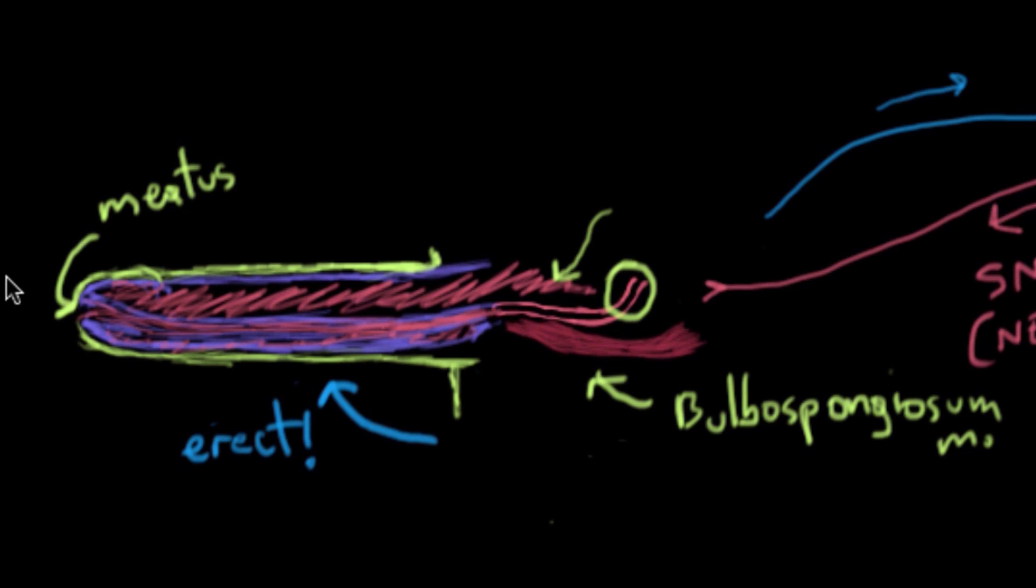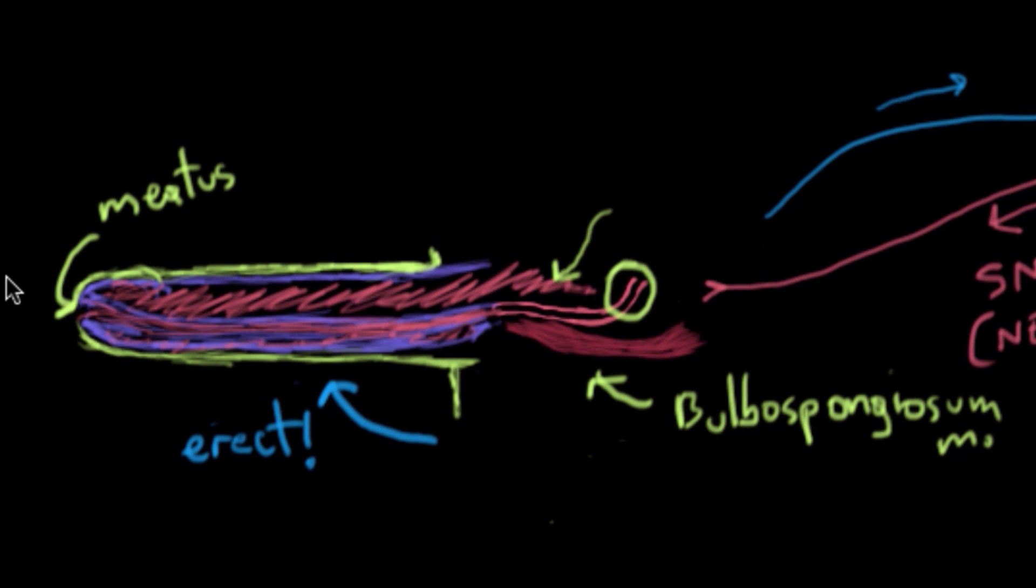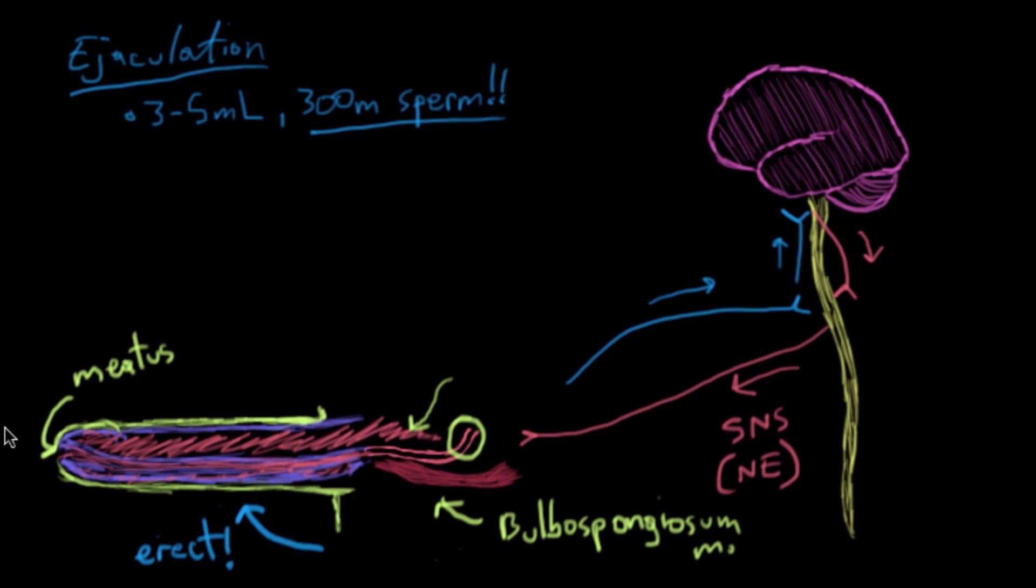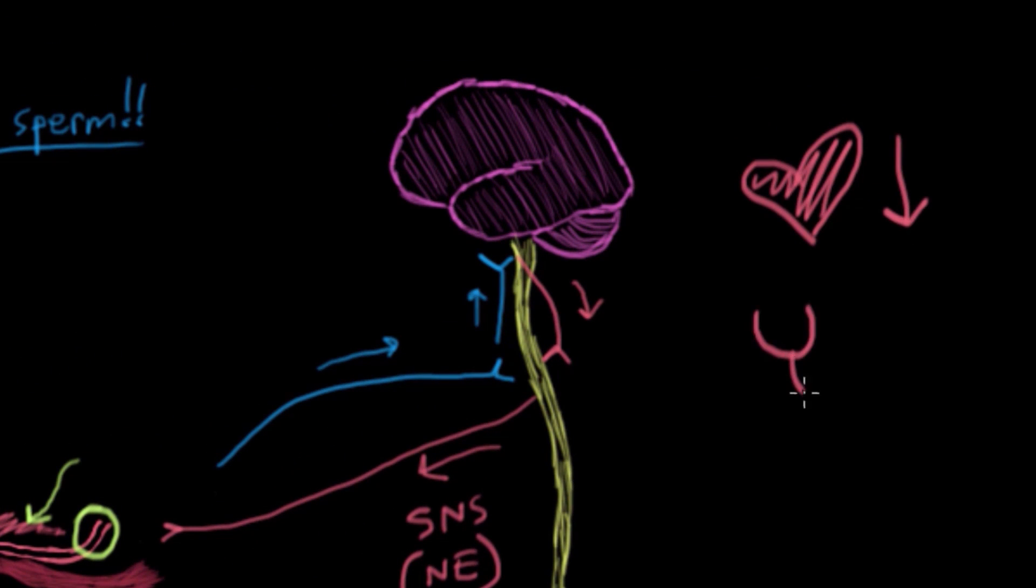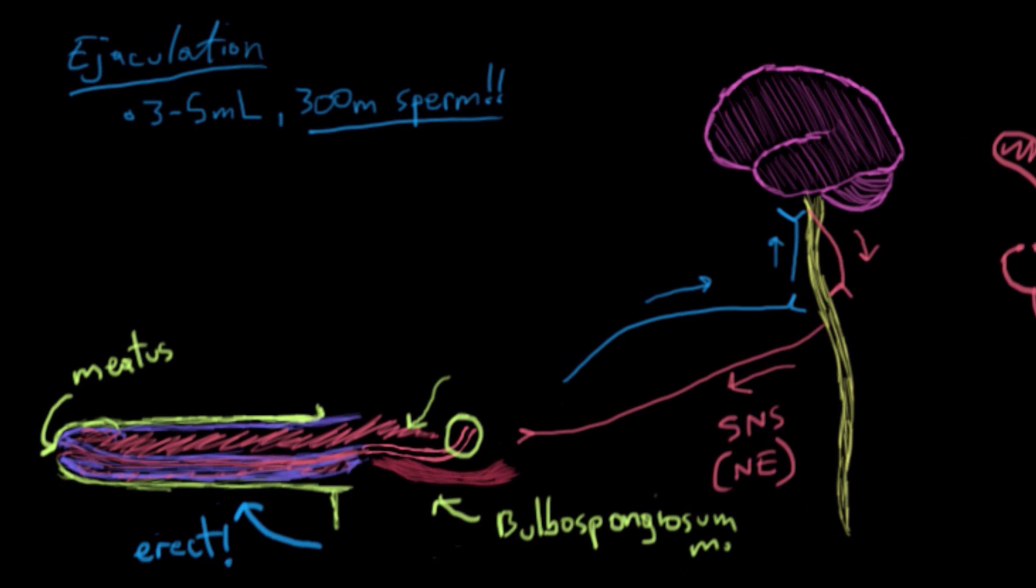All of these muscular contractions are associated with a feeling of extreme pleasure. Actually, you also get full body physiological changes. For example, you see a decrease in heart rate and blood pressure after ejaculation. In sum, the process of ejaculation and the whole body physiological changes is called an orgasm.